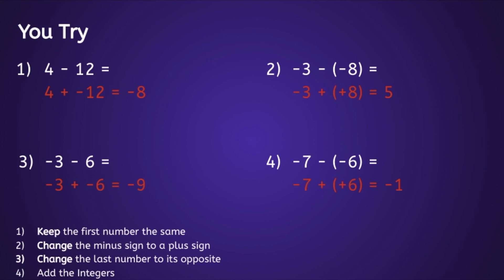The answer to number one is negative eight. The answer to number two is positive five. The answer to number three is negative nine. And the answer to number four is negative one. If you did end up getting any of these incorrect, I would recommend you take the time and try to find your mistake — that is one great way to improve at mathematics.